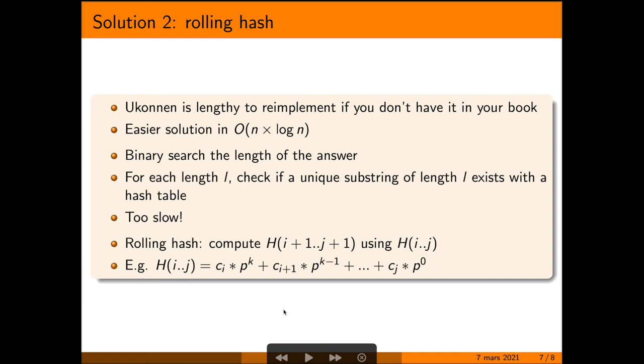You can do that if you have a hash which is, for example, polynomial. So if you have the hash of i to j, you remove the last factor, multiply everything by your prime p, and add the character j plus one.